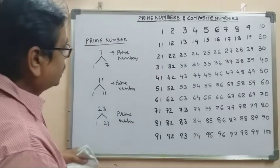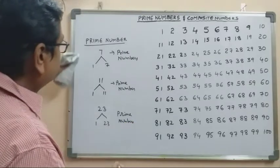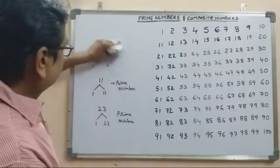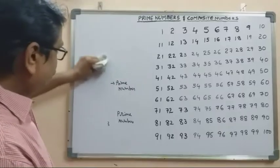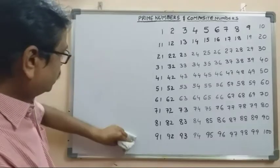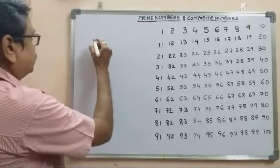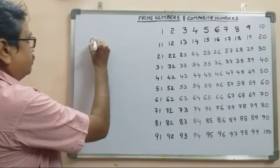Composite numbers, for example, have more than two factors. That is called a composite number.